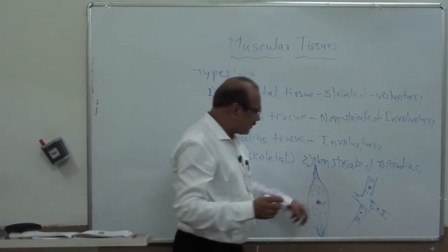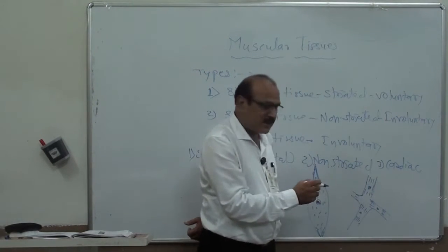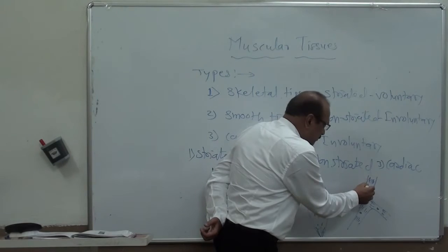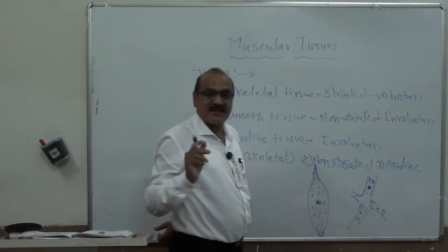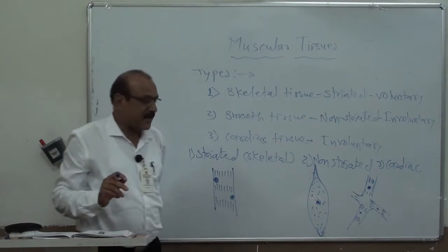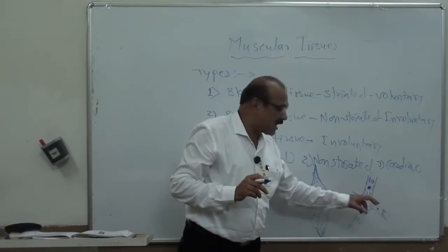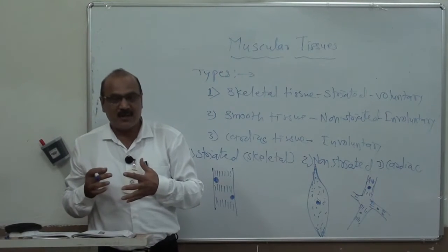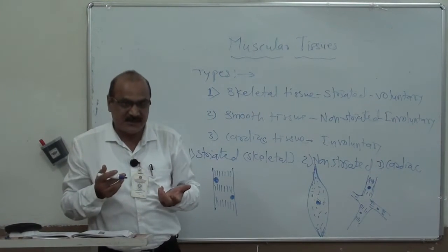In the third type, cardiac muscles, striations are present but the nucleus is present in the center. All these cardiac tissues are interconnected to each other and form anastomosing branches.